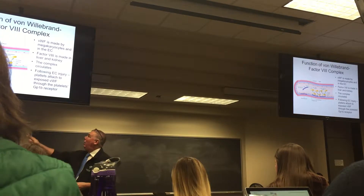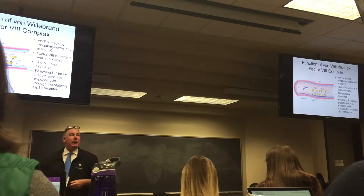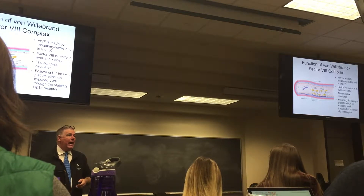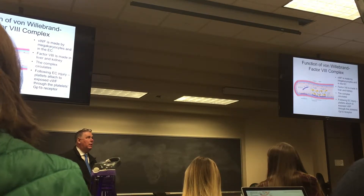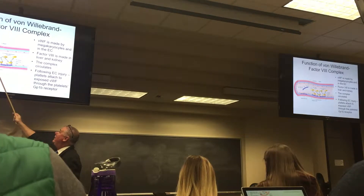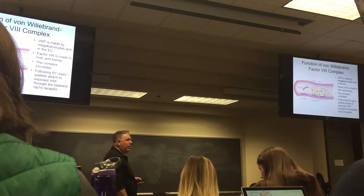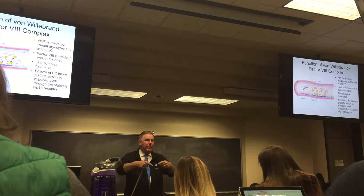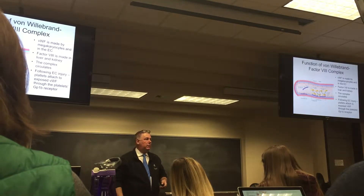Von Willebrand factor is not only in the extracellular matrix — it's also circulating in a complex with factor VIII, which is part of the clotting cascade. Factor VIII and the von Willebrand factor complex can activate factor X. Factor X is where the different mechanisms of clotting come together — once you get to factor X, the process is off and running.